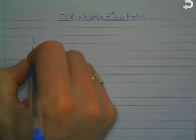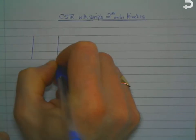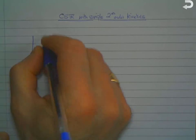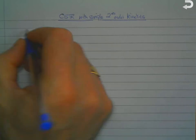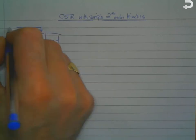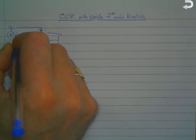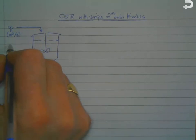Let's look now at the case of a CSTR, continuous stirred tank reactor, with simple second order kinetics. We've got the usual system with a volumetric flow rate of Q meters cubed per second.